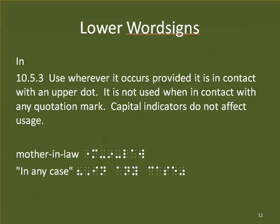Regarding lower word signs, we can use the IN contraction wherever it occurs, provided it is in contact with an upper dot. It is not used when in contact with any quotation mark. Capital indicators do not affect usage. So we will now see it in words like 'mother-in-law,' where we did not see it before — because according to UEB rules, there are hyphens on either side, so IN is standing alone and we can use the contraction. However, if IN is next to a quotation mark, we cannot use the contraction for IN.